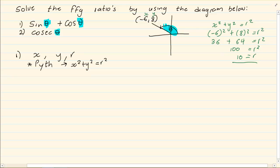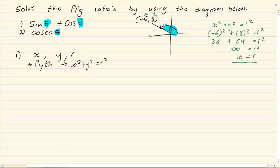As discussed in previous videos, r is always positive. So my values are: x equals minus 6, y equals 8, and r equals 10. Once you get x, y, and r using Pythagoras, you are going to simply substitute.